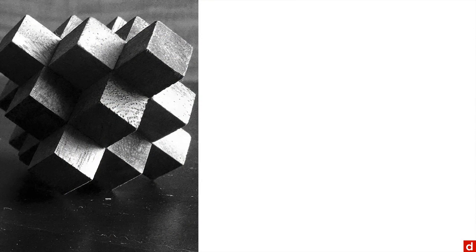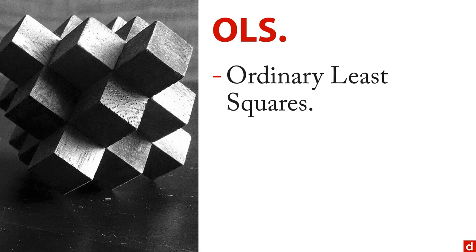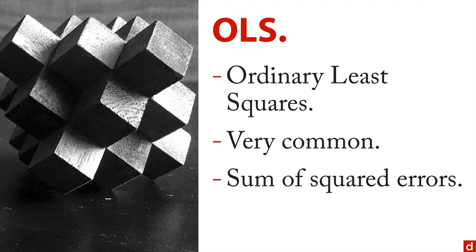We'll begin with the most common. This is actually called OLS, which is short for Ordinary Least Squares. This is a very common approach used in a lot of statistics, and it's based on what's called the sum of squared errors. And it's characterized by an acronym called BLUE, which stands for Best Linear Unbiased Estimator. Let me show you how that works.